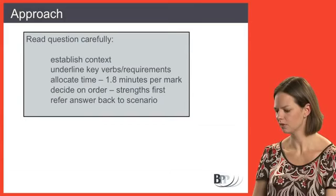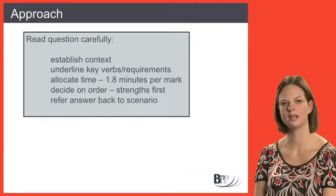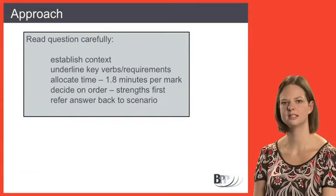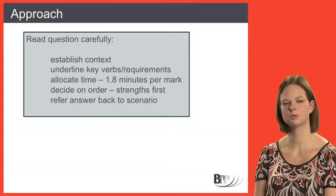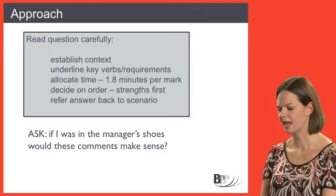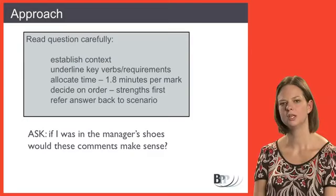Decide on the order and play to your strengths first — you don't have to do part A first. With Crumbly Cakes, part B was asking you to calculate some variances and you may have felt more comfortable doing the calculations first, as long as you leave sufficient time for part A afterwards. Also make sure your answer refers back to the scenario — thinking about cakes, using words like eating, and for example if we're looking at a hospital we wouldn't talk about customers, we'd talk about patients. Ask yourself: if I was in the manager's shoes, would these comments make sense to me? You need to apply knowledge, not just recite it from a textbook.